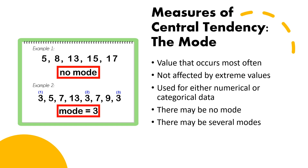The next measure of central tendency is the mode. Mode is the value that occurs most often. It is not affected by extreme values and can be used with either numerical or categorical data. There may be no mode if no values repeat. In example two, the value three appears three times, so three is the mode because it is the value that occurs most often.